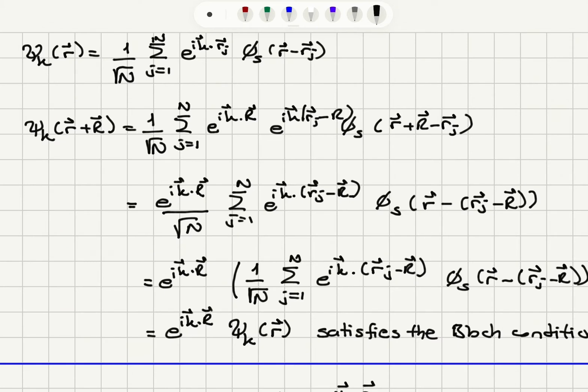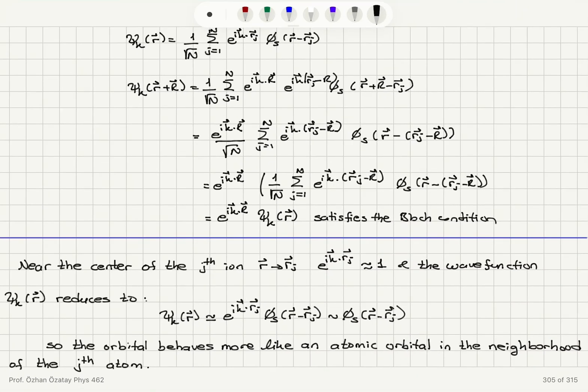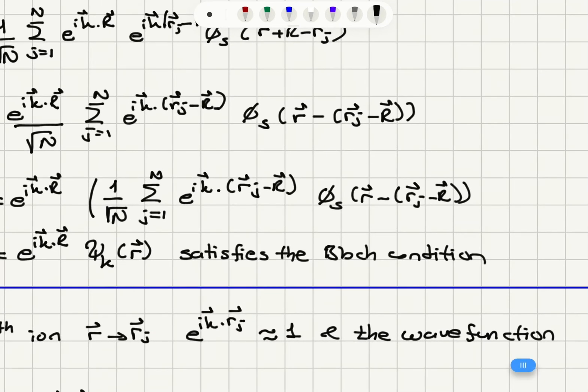So that means basically I have e to the i k dot R times sum 1 over square root N j equals 1 to N e to the i k dot rj minus R phi s of r minus rj minus R. So this is basically